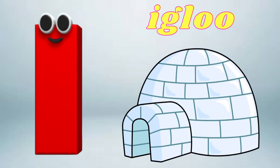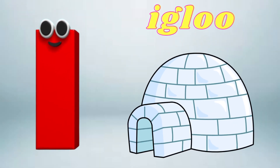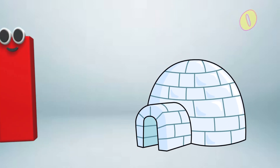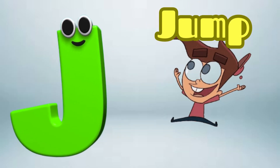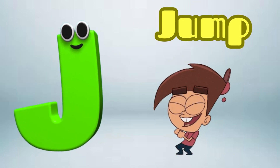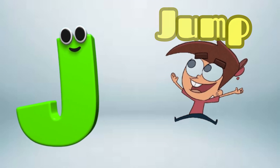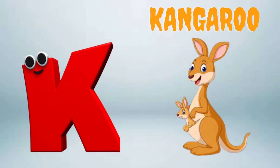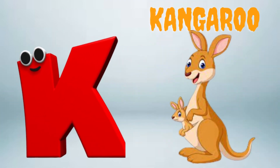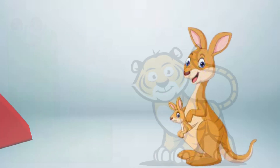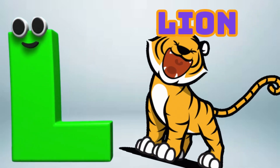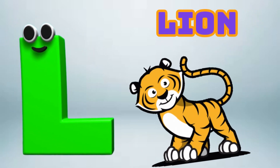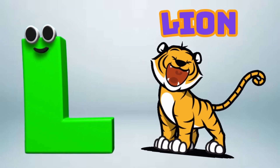I is for Igloo, I-I-Igloo. J is for Jump, J-J-Jump. K is for Kangaroo, K-K-Kangaroo. L is for Lion, L-L-Lion.